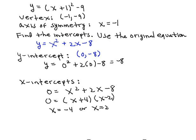So we can say that the x-intercepts will be the points negative 4, 0, and 2, 0. So next, we'll put all this information together and sketch the graph.